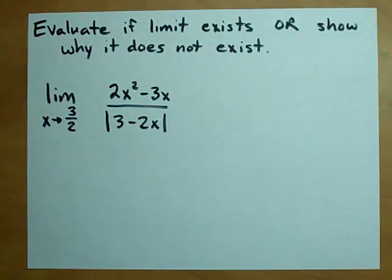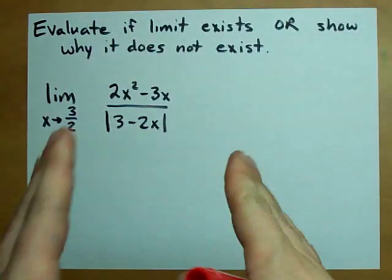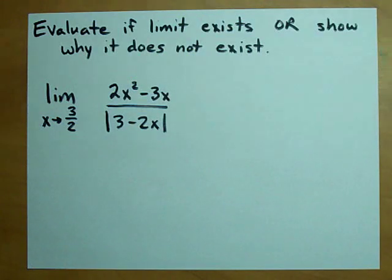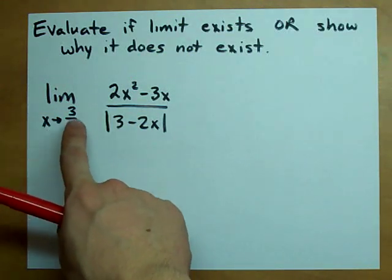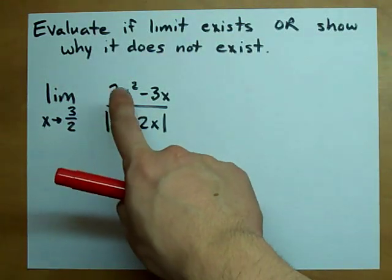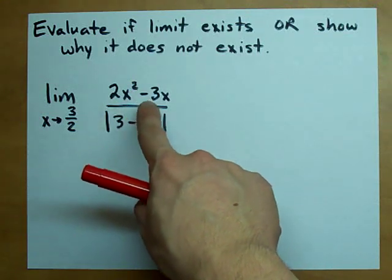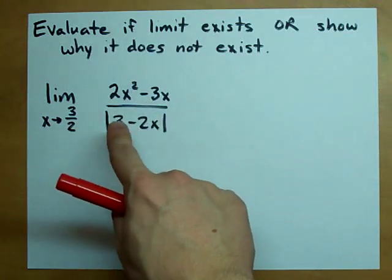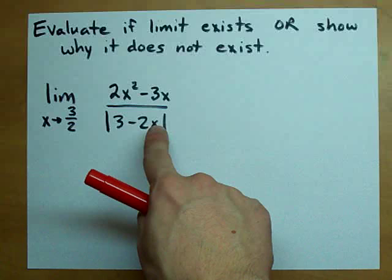They want us to evaluate this limit or show why it doesn't exist. The limit as x approaches 3 halves of 2x squared minus 3x all over the absolute value of 3 minus 2x.